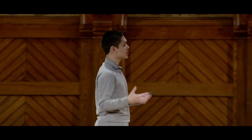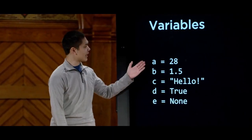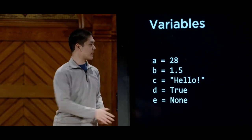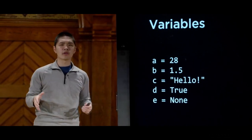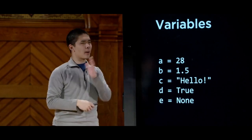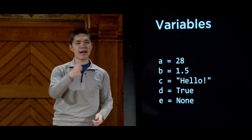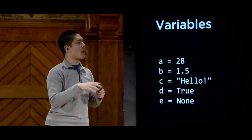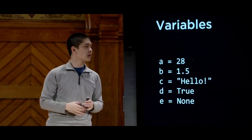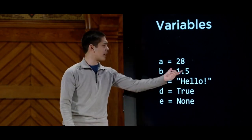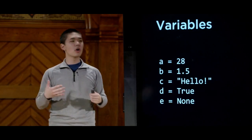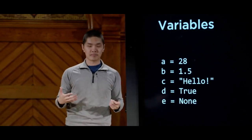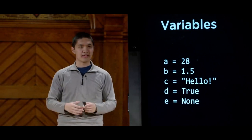Like many other programming languages, Python also supports variables. To assign a value to a variable, the syntax looks like 'a equals 28'. Unlike C or Java, where you have to specify the type of every variable, Python doesn't require you to declare types explicitly. Python can infer that 28 is an integer, so the variable a will be represented as an int.